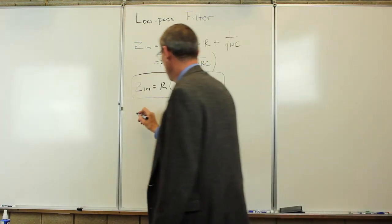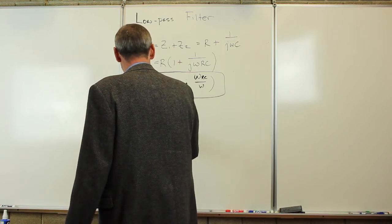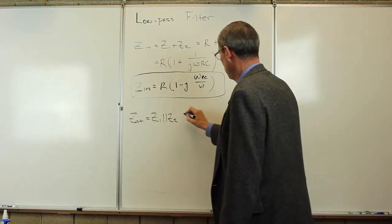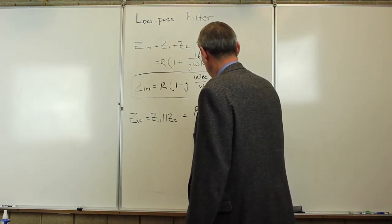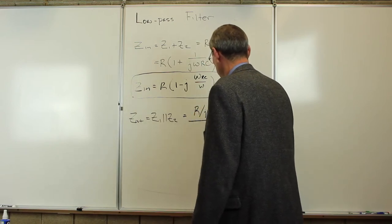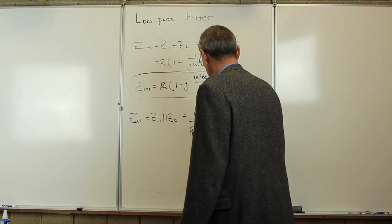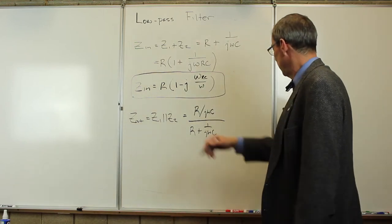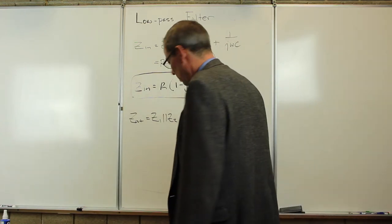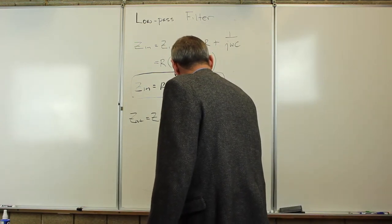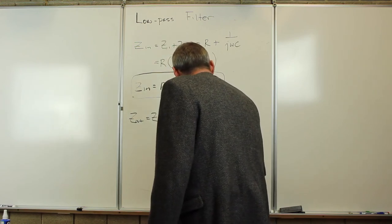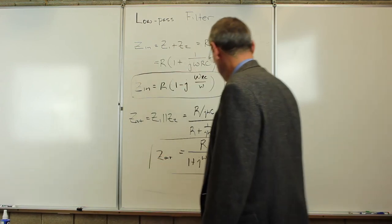Output impedance, we know that as well. Z out is going to be Z1 parallel to Z2, which is going to be R over J omega C, that's the product of them, over R plus 1 over J omega C. Take the 1 over J omega C out, work it through. We're going to get something that looks like R over 1 plus J omega over omega RC for the output impedance.